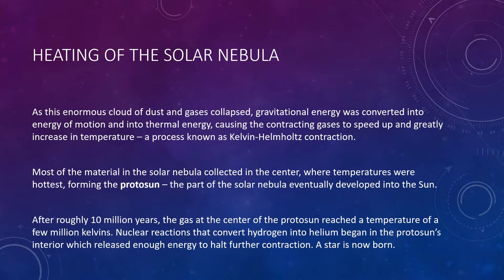Eventually, after perhaps 10 million years, the gas at the center of the protosun reached a density of about 13 times that of iron—about 10⁵ kilograms per meter cubed—and a temperature of a few million degrees Kelvin. Under these extreme conditions, nuclear reactions converting hydrogen into helium began in the protosun's interior, releasing energy that significantly increased the pressure in the core. When the pressure built up enough, it stopped further contraction of the protosun, and a true star was born.